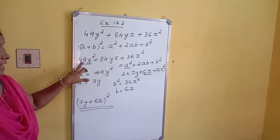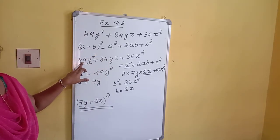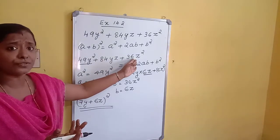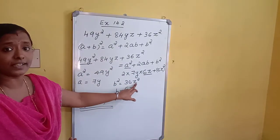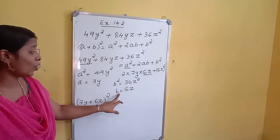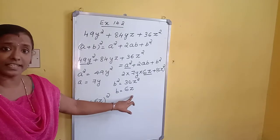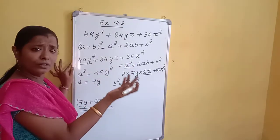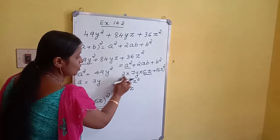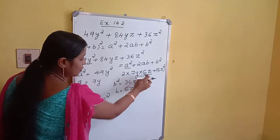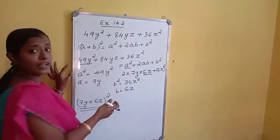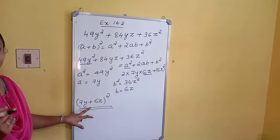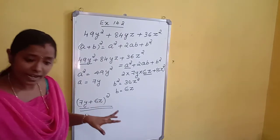To summarize: A squared is 49Y squared so A equals 7Y; B squared is 36Z squared so B equals 6Z. Then 2AB equals 2 into 7Y into 6Z equals 84YZ. So the required factorization is 7Y plus 6Z whole square.